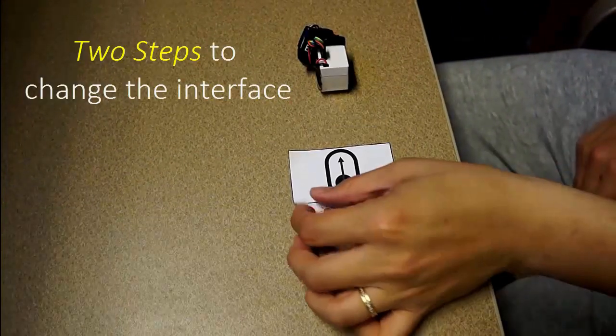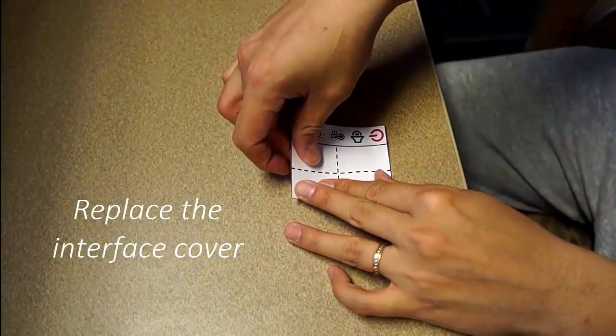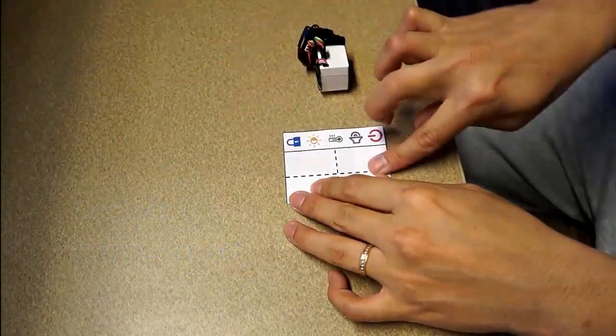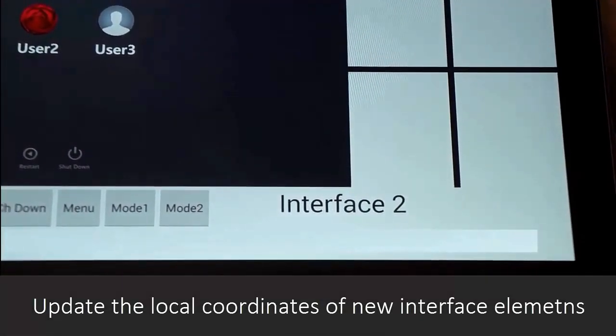How can we change the interface? Here are two simple steps to change the interface. First, replace the physical interface by printing the new interface cover. Second, update local coordinates of new interface elements to the system.